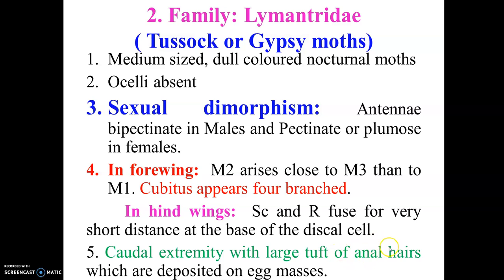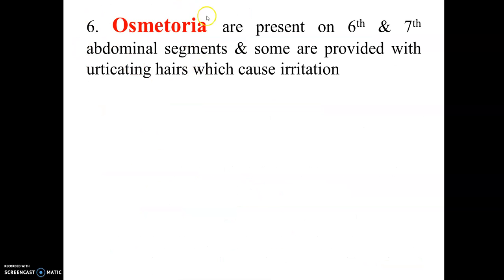These hairs are shed after egg-laying, and the eggs are covered with these hairs. Another important character is the presence of asthmatoria — structures present on the sixth and seventh abdominal segments — through which odoriferous or unpleasant chemicals are released. Their main function is defensive, and the secretions cause irritation when the larvae are touched.